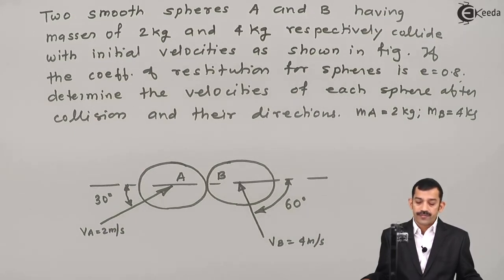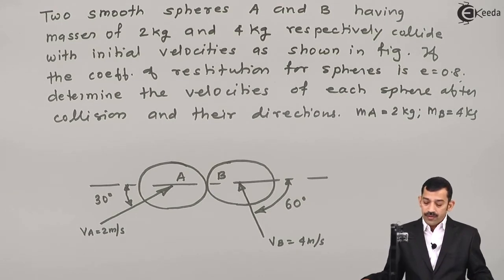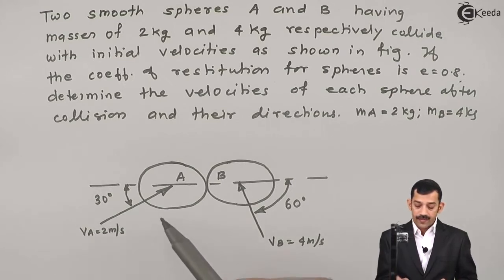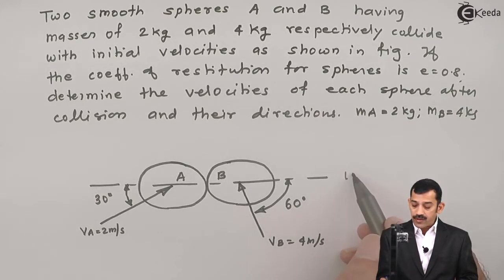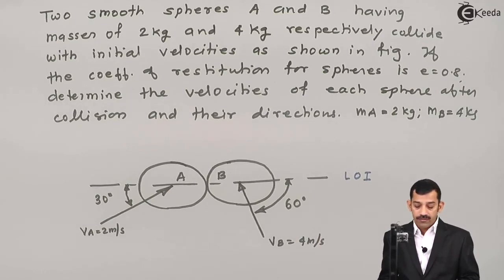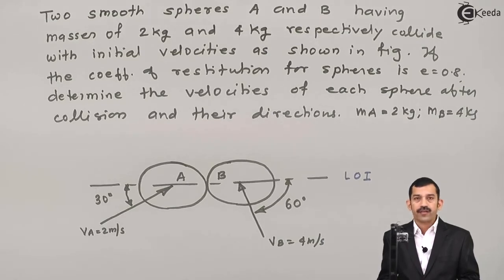Masses of bodies A and B are given: 2 kg for body A and 4 kg for body B. The basic difference from the first problem is that in this problem, velocities of these bodies are non-collinear with the line of impact. As these velocities are non-collinear, the line of impact is horizontal (LOI). Therefore, the type of impact is indirect or oblique impact. Components of velocities along the line of impact will vary as per conservation of momentum and the coefficient of restitution equation, while components perpendicular to the line of impact remain the same after impact.